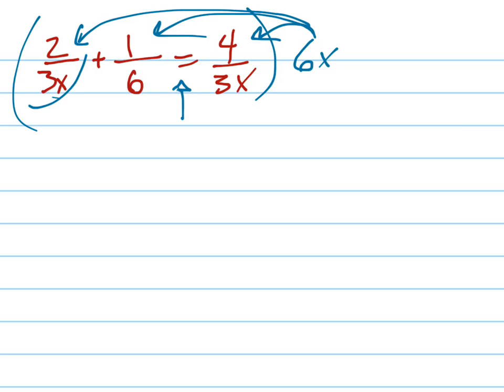When I multiply 6x times 2 over 3x, the 6x and the 3x cancel, and you just get 2 times 2. That's what you'd have left. When I multiply the 6 times the 1 over 6, the 6s would cancel, and I just get 1 times x.